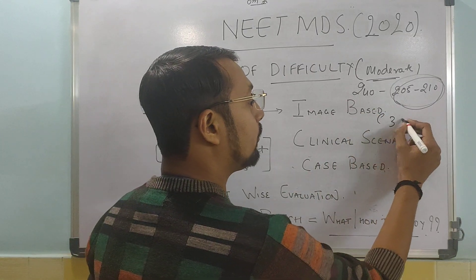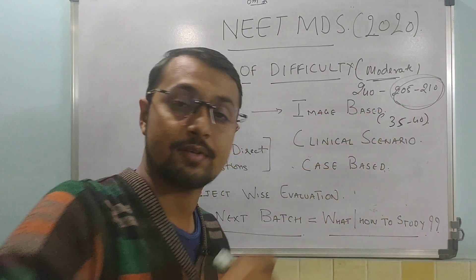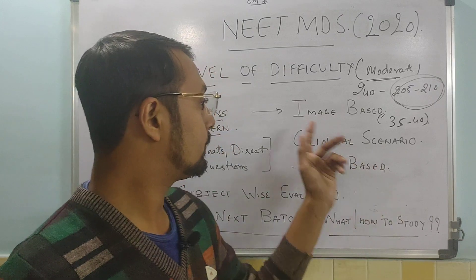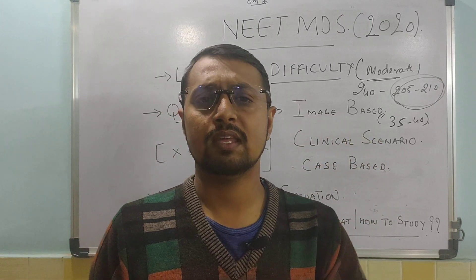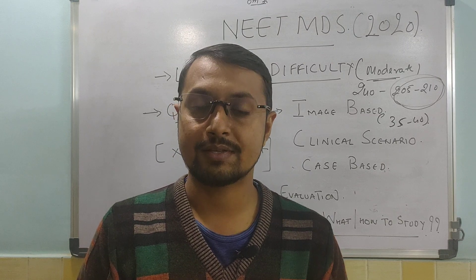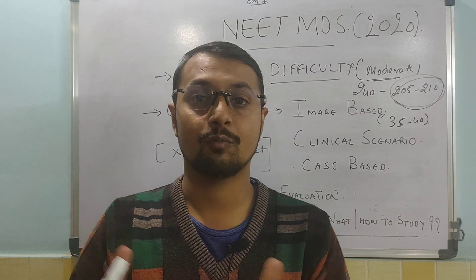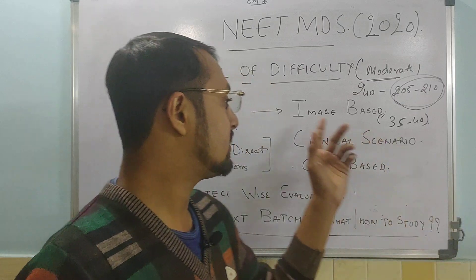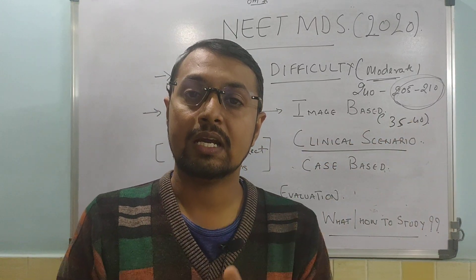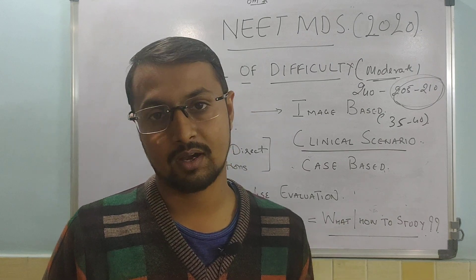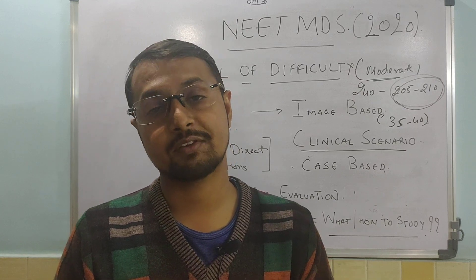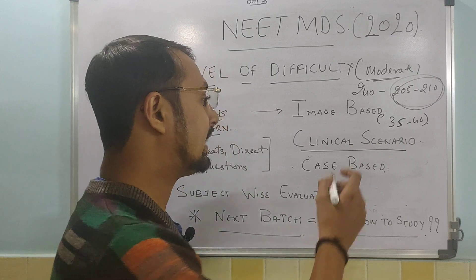Around 35 to 40 image-based questions were there. Students said that in Paper 1 around 10 to 15 questions were there, and in Paper 2 around 20 to 25. Image-based questions were very important this time. They asked about orthodontic appliances, histological and pathological slides, clinical diagnosis, and what tests to perform. There were also clinical scenarios related to oral surgery and endodontics — how to manage patients, treatments for fractures, and emergency drugs.